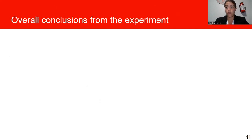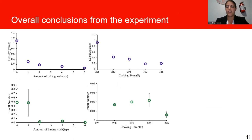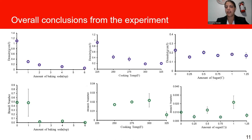To summarize our overall conclusions: increasing the amount of baking soda decreases both the density and the hardness of the candy. Increasing the cooking temperature decreased the density and generally increased the hardness of the candy. Finally, changing the corn syrup to sugar ratio had no correlation to the density or hardness number of the candy.